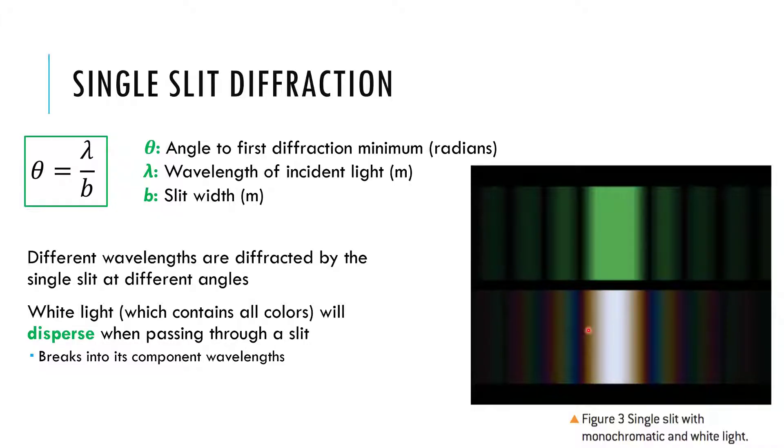So it breaks light up into its component wavelengths. It splits the red differently than the blue, and everything in between, and so we can take that white light, and we call that dispersion. Whenever you're breaking light up into its component pieces, this is one way to do it. There are other ways, like with prisms and some other ideas,